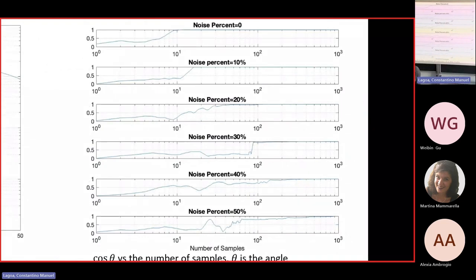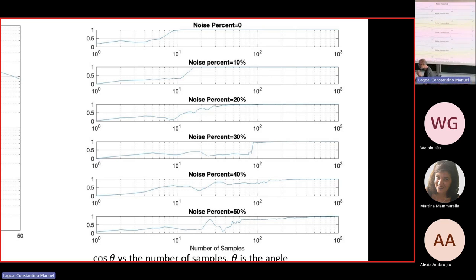On the right side we have convergence plots for different values of noise. Since the solution is anything in the null space of the matrix, we measure it in angles — I'm plotting the cosine of the angle, which should be one if we get the right parameter. With zero percent noise and a quadratic surface fitting a quadratic polynomial, you need about ten points. When you put 20% noise, you need hundreds of points. With 50% noise you essentially have just a cloud, but if you go to hundreds of thousands of points, the algorithm recovers your surface.